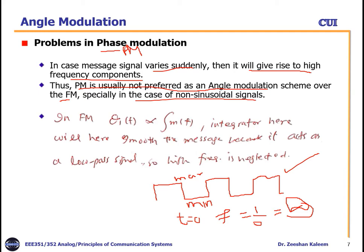How is this issue overcome in FM modulation? In FM, the instantaneous phase is represented as the integral of the message signal. When we integrate, the integrator acts as a low-pass filter, making the signal smooth so that high frequency components are neglected and avoided. So this is why we don't prefer phase modulation over FM modulation.